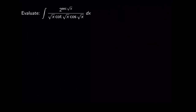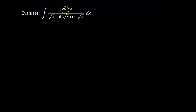Next, let us evaluate the integral of 2 raised to secant of square root of x, times square root of x, cotangent of square root of x, times cosine of square root of x. This looks complicated, however if we look at the form and use substitution, it becomes easier. Notice that we have secant as an exponent — that is our usual candidate for u. So I will let u equal secant of square root of x.